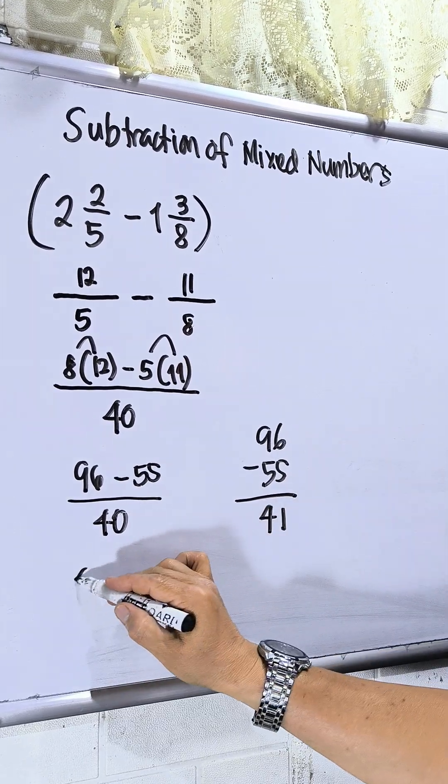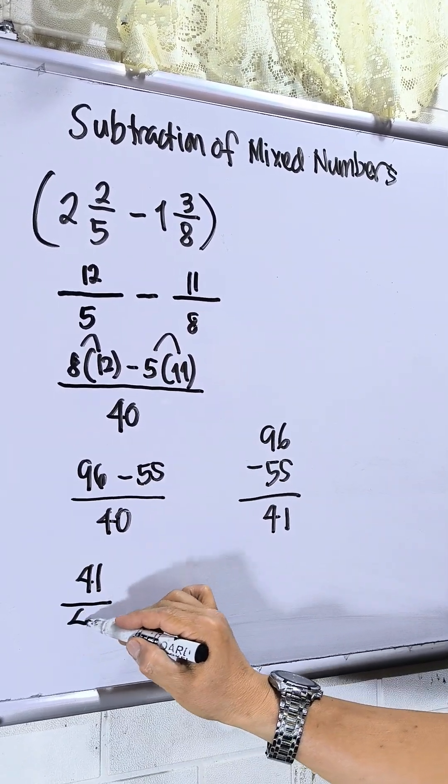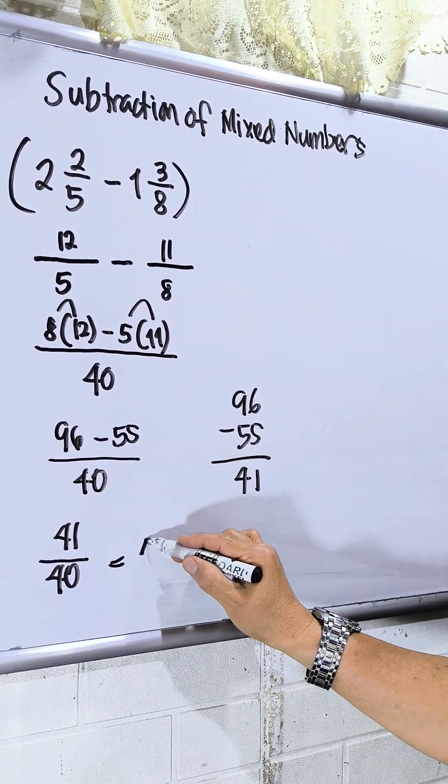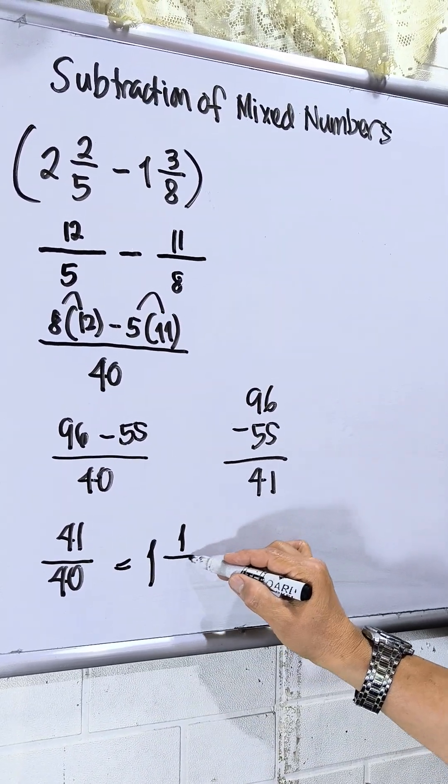Then, this will be 4. So, this will be 41 over 40. Since this is improper fraction, so divide. So, this will be 1 and 1 over 40.